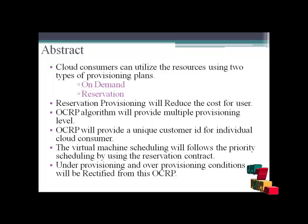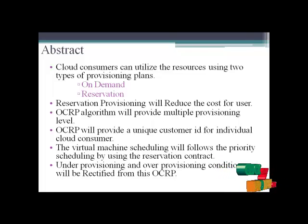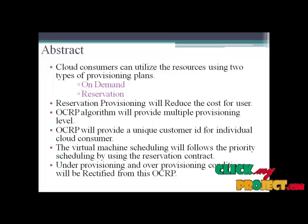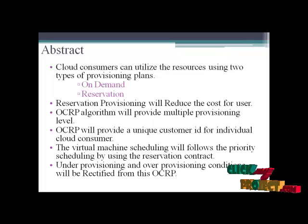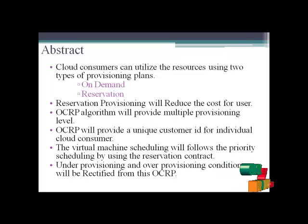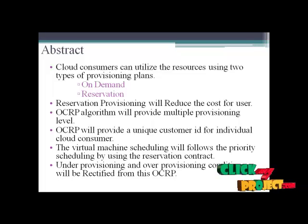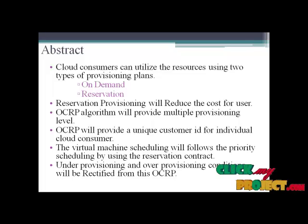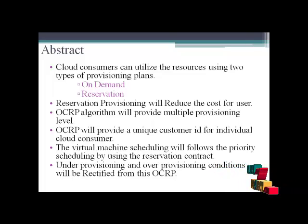The virtual machine scheduling will follow priority scheduling using the reservation contract. We have to use four types of algorithms to achieve less resource utilization: priority scheduling, stochastic computation, provisioning cost, and Bender's decomposition. Under-provisioning and over-provisioning conditions will be rectified by OCRP to achieve lesser cost and the best quality of service.